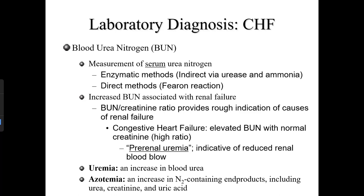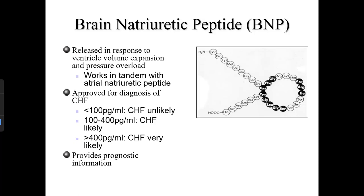Uremia is an increase in blood urea; azotemia is an increase in nitrogen-containing end products including urea, creatinine, and uric acid. Brain natriuretic peptide (BNP) is another indicator of CHF — not myocardial infarction. It is released in response to ventricular volume expansion and pressure overload. BNP greater than 100 pg/mL indicates CHF is likely; 100–400 is likely; greater than 400 is very likely. Higher levels indicate a worse prognosis.